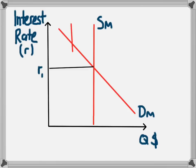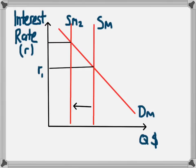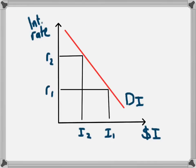The effect of these actions is that the supply of money falls from SM to SM2, leading to a new higher equilibrium interest rate — the interest rate rises from R1 to R2. That increased interest rate is seen in the next diagram: higher interest means businesses are less likely to borrow money for investment, so they decrease their investment plans, leading to a decrease in investment from I1 to I2.